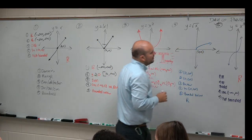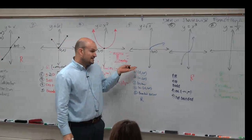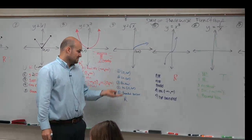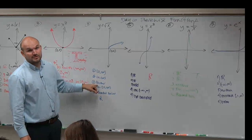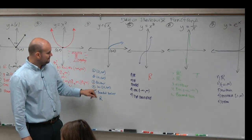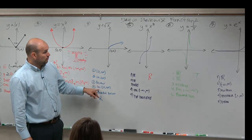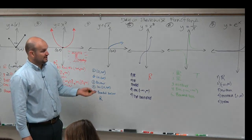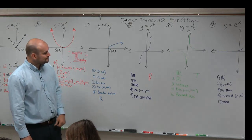This square root function starts at (0, 0). The domain includes 0 and goes to infinity. The range goes as low as 0 but goes up to infinity. There is no symmetry of this graph, so it is neither even nor odd. It is increasing on the whole domain, zero to infinity, and it is bounded below. It continues rising, so it's not bounded above, but it's bounded below.